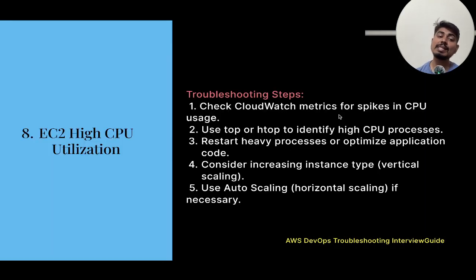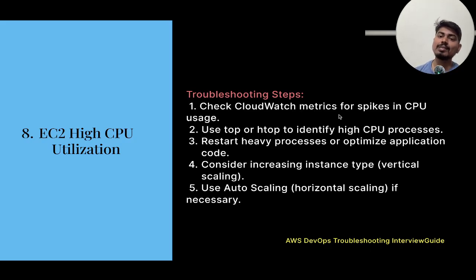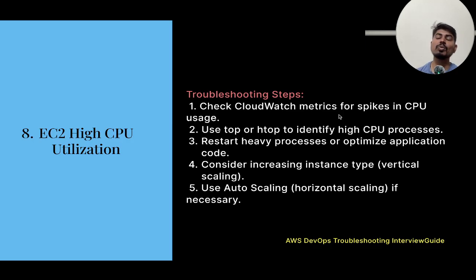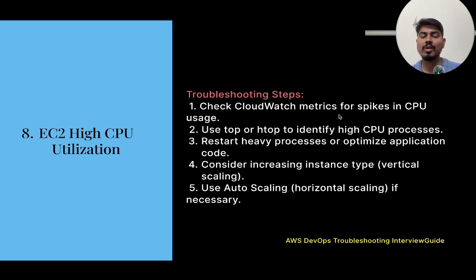The next question is: EC2 instance having high CPU utilization. First, check CloudWatch metrics for spikes in CPU usage. Use the top or htop command to identify high CPU processes. Restart heavy processes or optimize the application code — though as a DevOps or SRE engineer we do not own the application code, so we inform the respective development team members to optimize the code and explain the scenario.